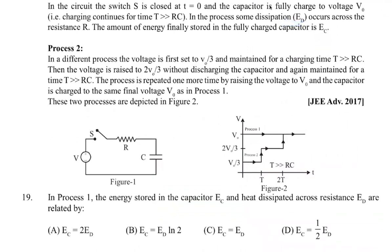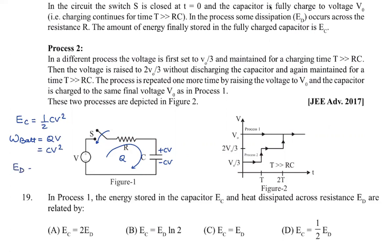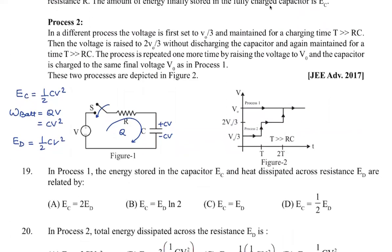We need to calculate the charge stored, energy stored, or energy dissipated in the resistance. In this circuit, when the switch is closed, heat is dissipated. The difference is half CV squared, so in Process 1, the values of E_s and E_d come out to be equal.